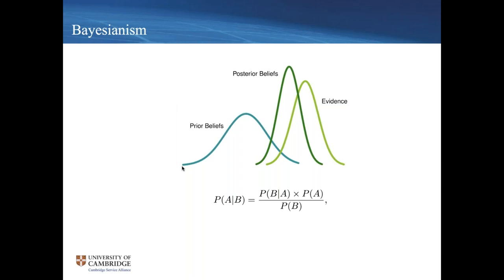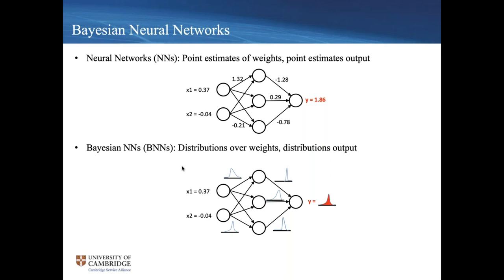A widely accepted framework for dealing with uncertainty is the Bayesian framework. The general idea is you have some prior belief, you look at what the data says, and your posterior output is somewhere between the two — a really useful framework for dealing with uncertainty. Typically neural networks don't use this: they use point estimates for all the weights, so the output is a point estimate with no uncertainty.